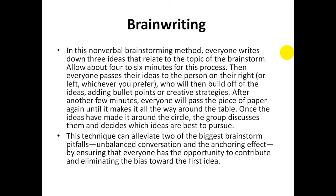After another few minutes, everyone will pass the piece of paper again until it makes it all the way around the table. Once the ideas have made it around the circle, the group discusses them and decides which ideas are best to pursue. This technique can alleviate two of the biggest brainstorming pitfalls — unbalanced conversation and the anchoring effect — by ensuring everyone has an opportunity to contribute and eliminating the bias towards the first idea. This is one of the most commonly used techniques in brainstorming sessions.